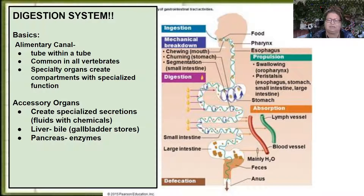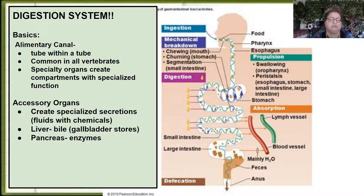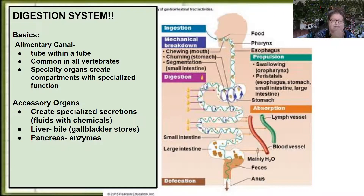The small intestine is going to be our big digester and absorber — all absorption takes place in the small intestine. The large intestine is primarily focused on absorbing water back into the system. Then we have accessory organs: the two you're most familiar with are the liver, which creates bile, and the gallbladder, which stores it, and the pancreas, which secretes enzymes into the small intestine.